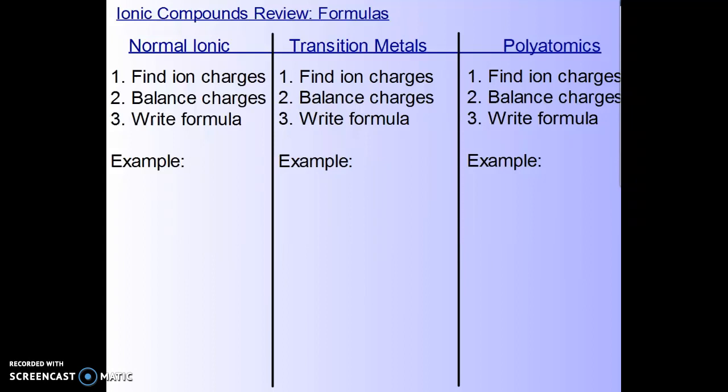Before we can get started, I want us to quickly review the differences between different types of ionic compounds that we've talked about so far. We have normal ionic compounds which have main group metals in them. This is pretty much the same process for all formulas, except once we get to transition metals and polyatomics, there's only a slight variation.